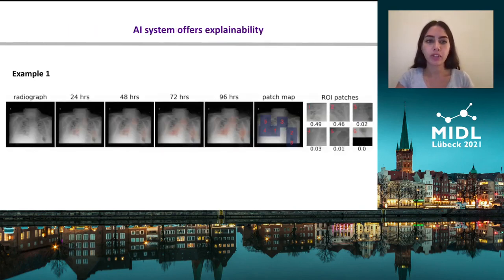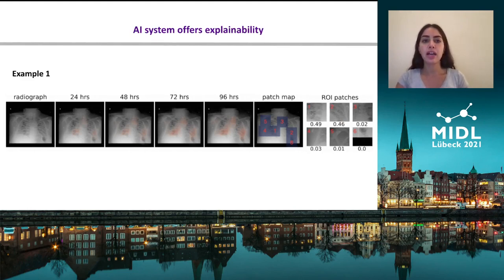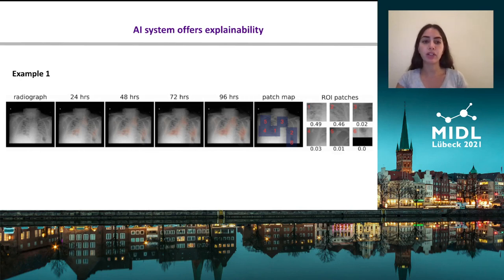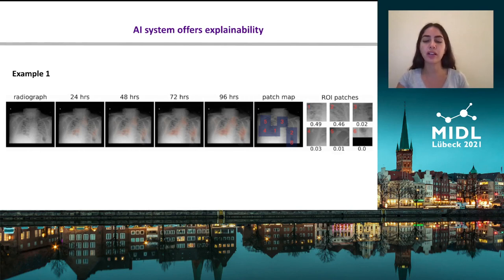In terms of interpretability, this is an example of a patient that has diffuse airspace opacities, and the saliency map does indeed highlight areas that correlate with abnormalities based on the assessment of our collaborating radiologists. The model also computes ROI patches and assigns attention scores to highlight their relative importance.